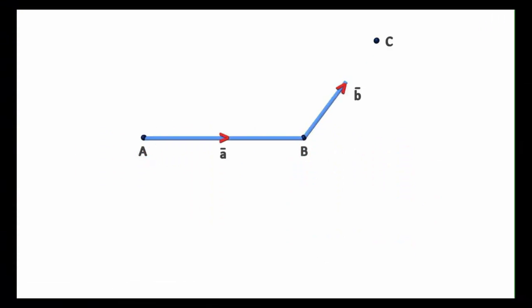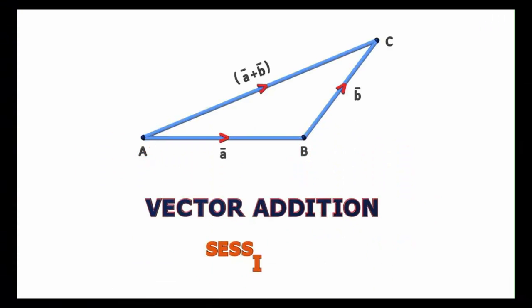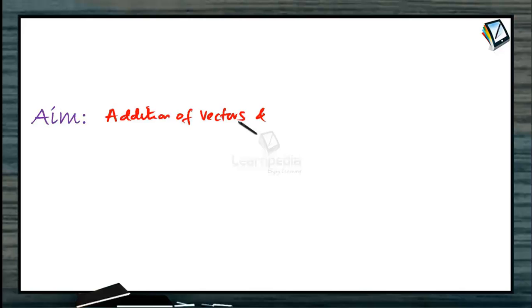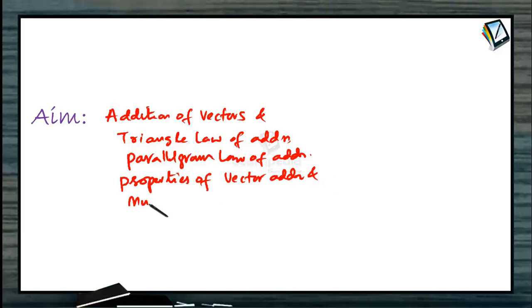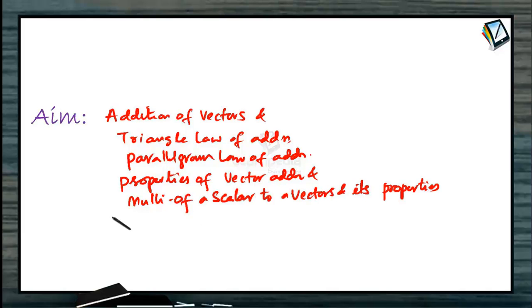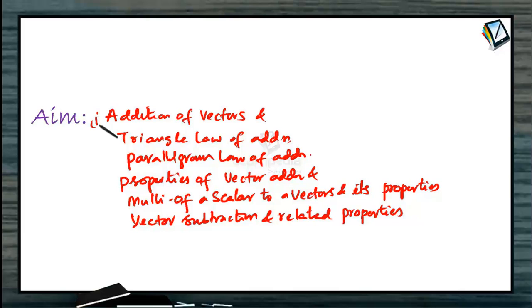Welcome to the Mathematics class. Let us discuss the topic Vectors, Session 2. The aim of this session is to define the addition of vectors and the formulae related with it — the triangle law of addition, the parallelogram law of addition — and also to define the properties of vector addition and multiplication of a scalar to a vector and its properties. Finally, we find how the difference of two vectors is taken, that is vector subtraction, and its related properties. These are the topics we are going to cover in this session.